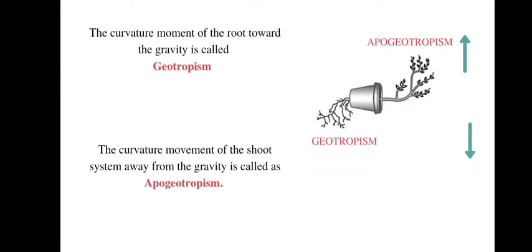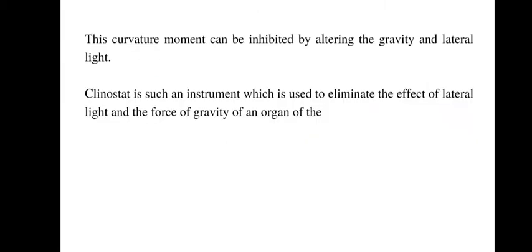Apogeotropism is sometimes referred to as negative geotropism. Phototropism means growth towards the source of light. Both geotropism and apogeotropism can be inhibited by altering gravity and lateral light. A clinostat is an instrument used to eliminate the effect of lateral light and the force of gravity on an organ of the plant.